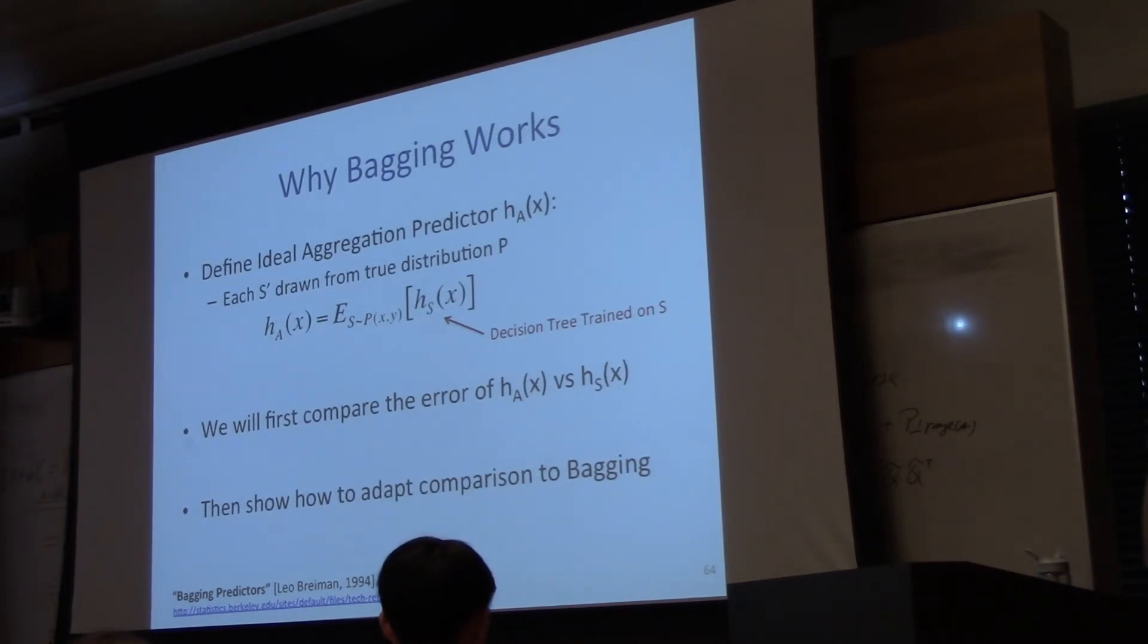So in order to think about why bagging works, we have to think back about the ideal predictor, where we can actually draw independent samples from the test distribution. That's easy to analyze. So this is ideal, this is the ideal aggregate, not the bootstrap aggregate. The ideal aggregate, we can actually draw a new sample, training set samples from the test distribution. So that's H sub A, that's the ideal aggregate. And it is the average over a bunch of these samples, and then we average their predictions.